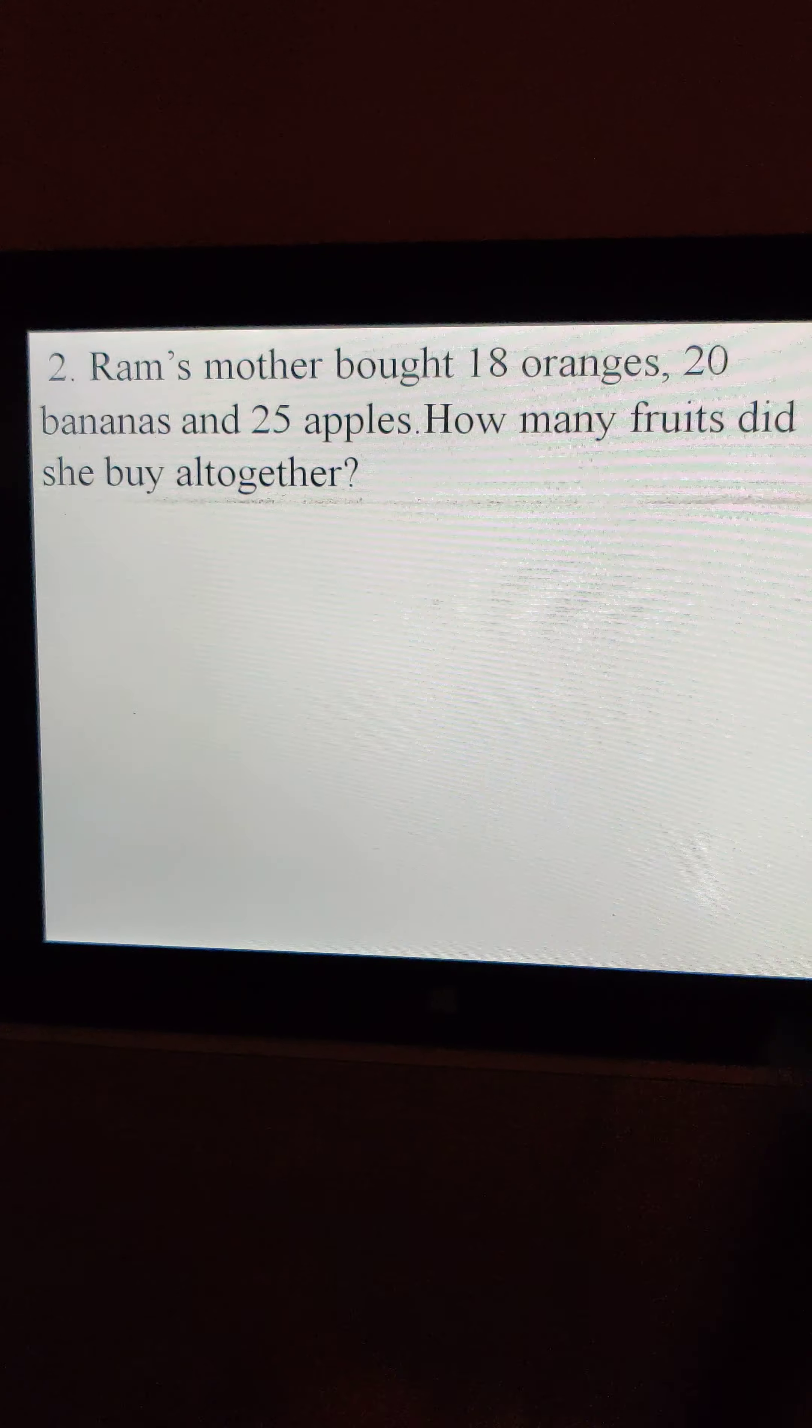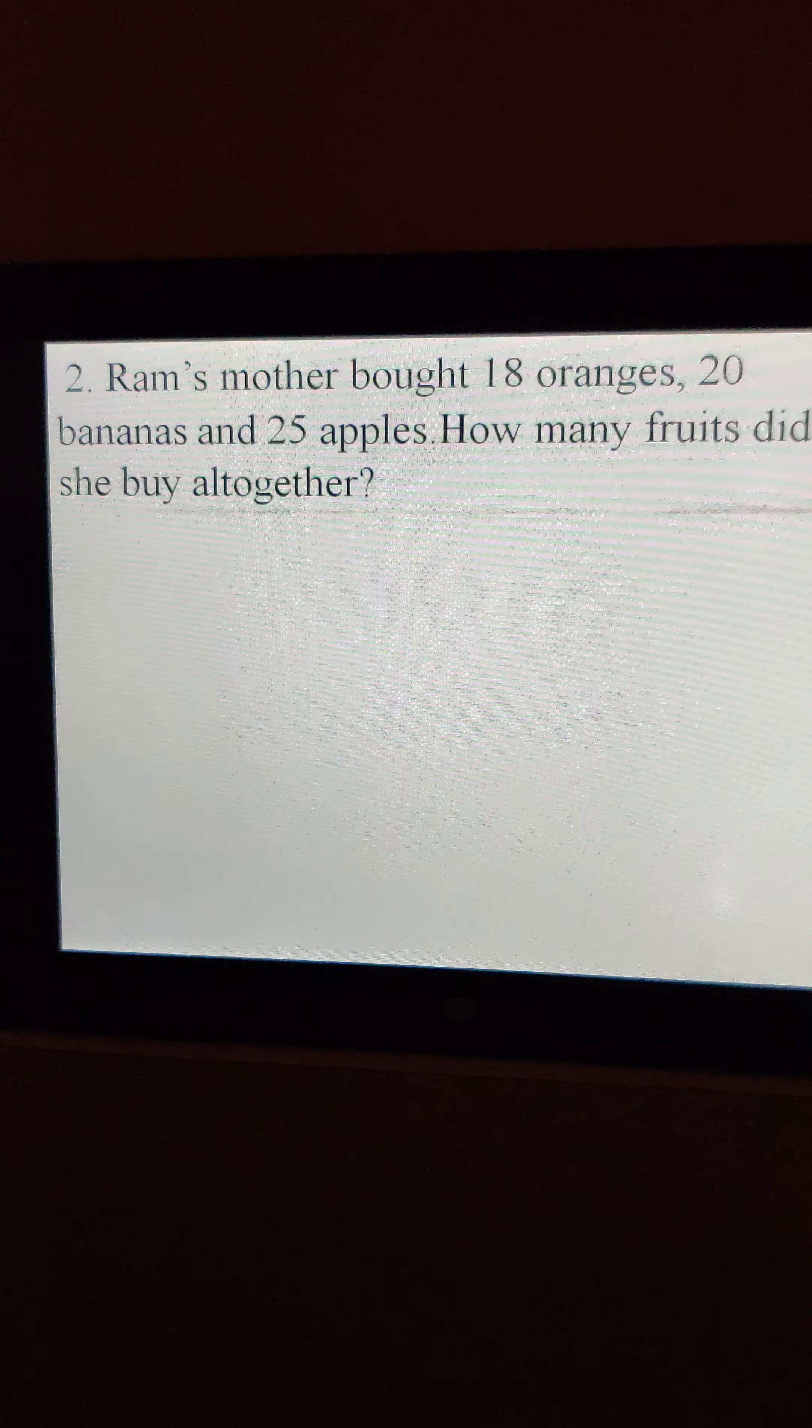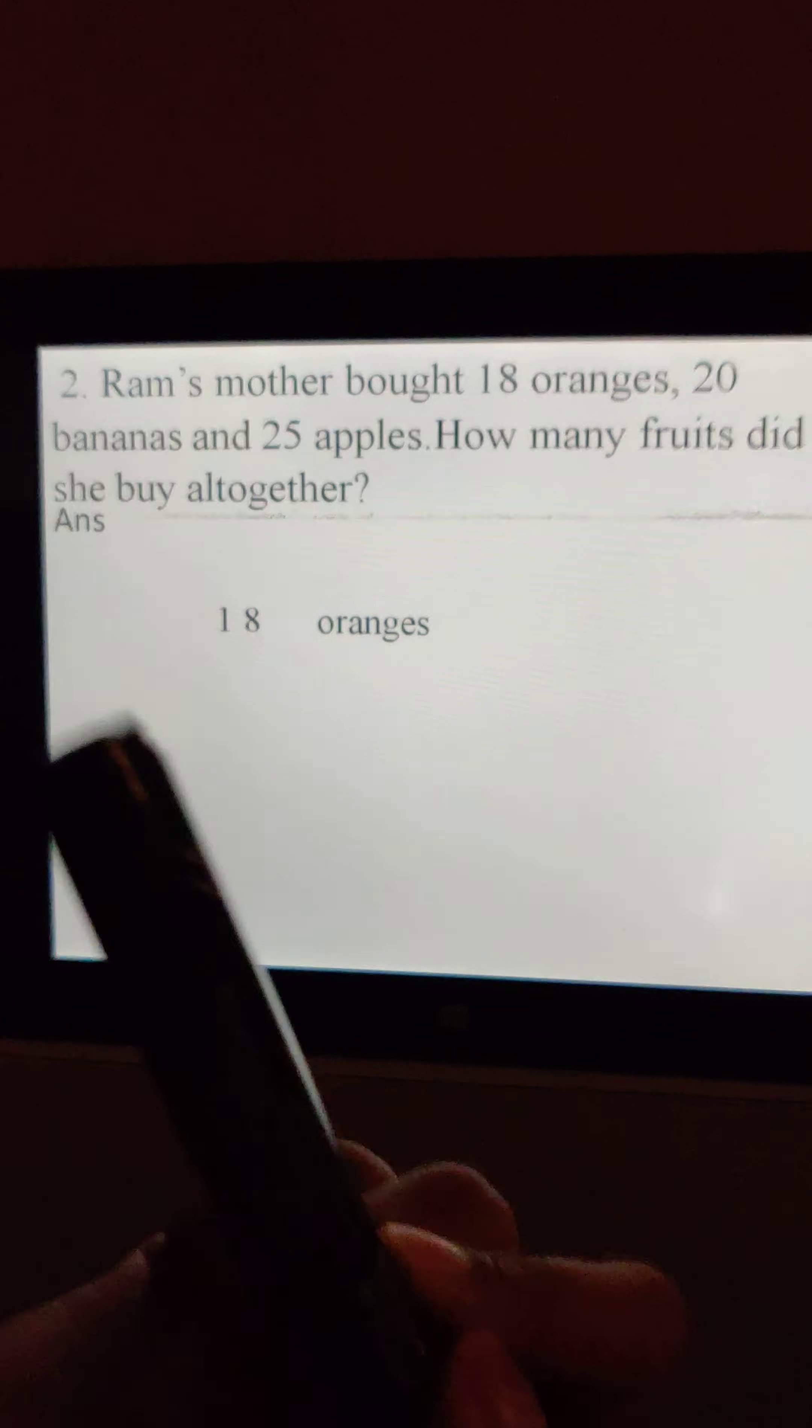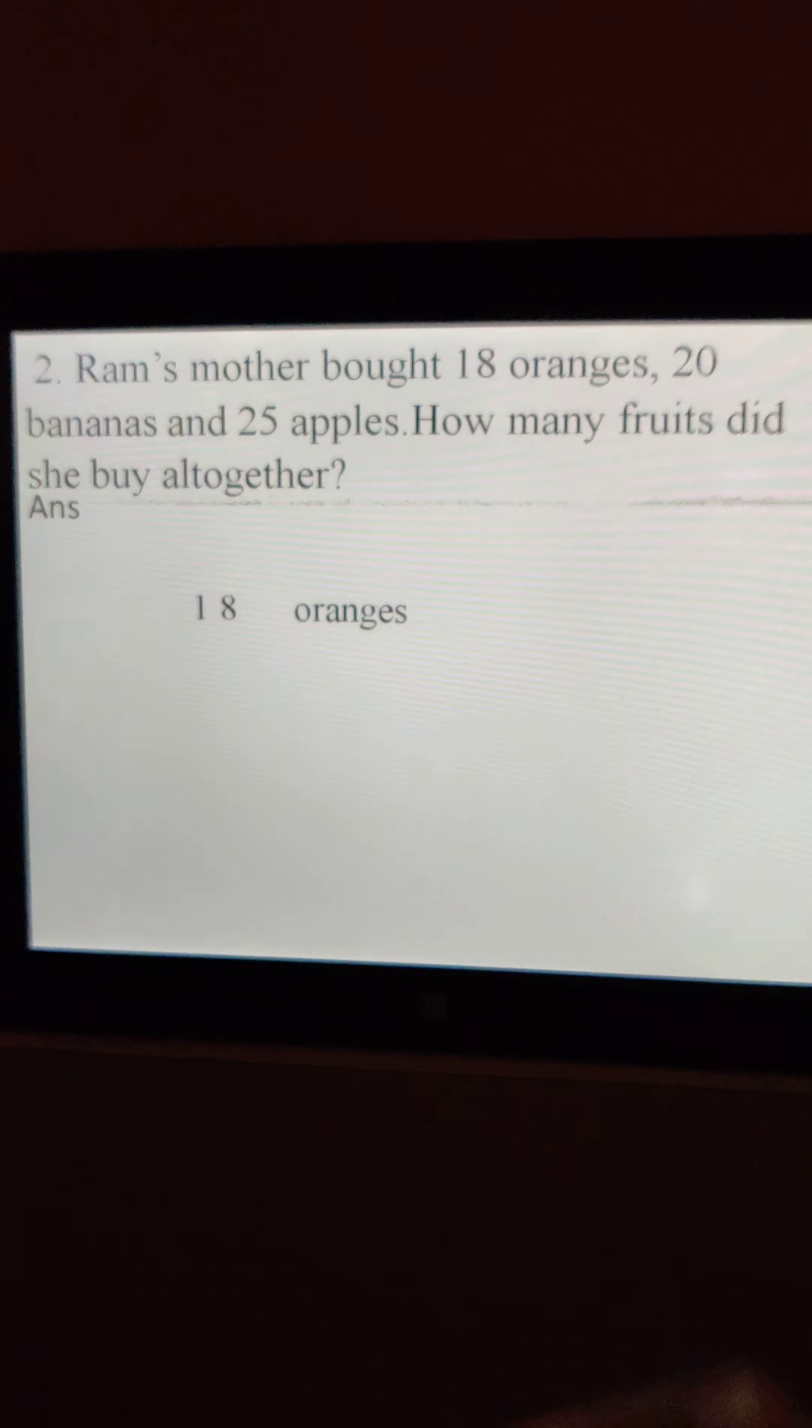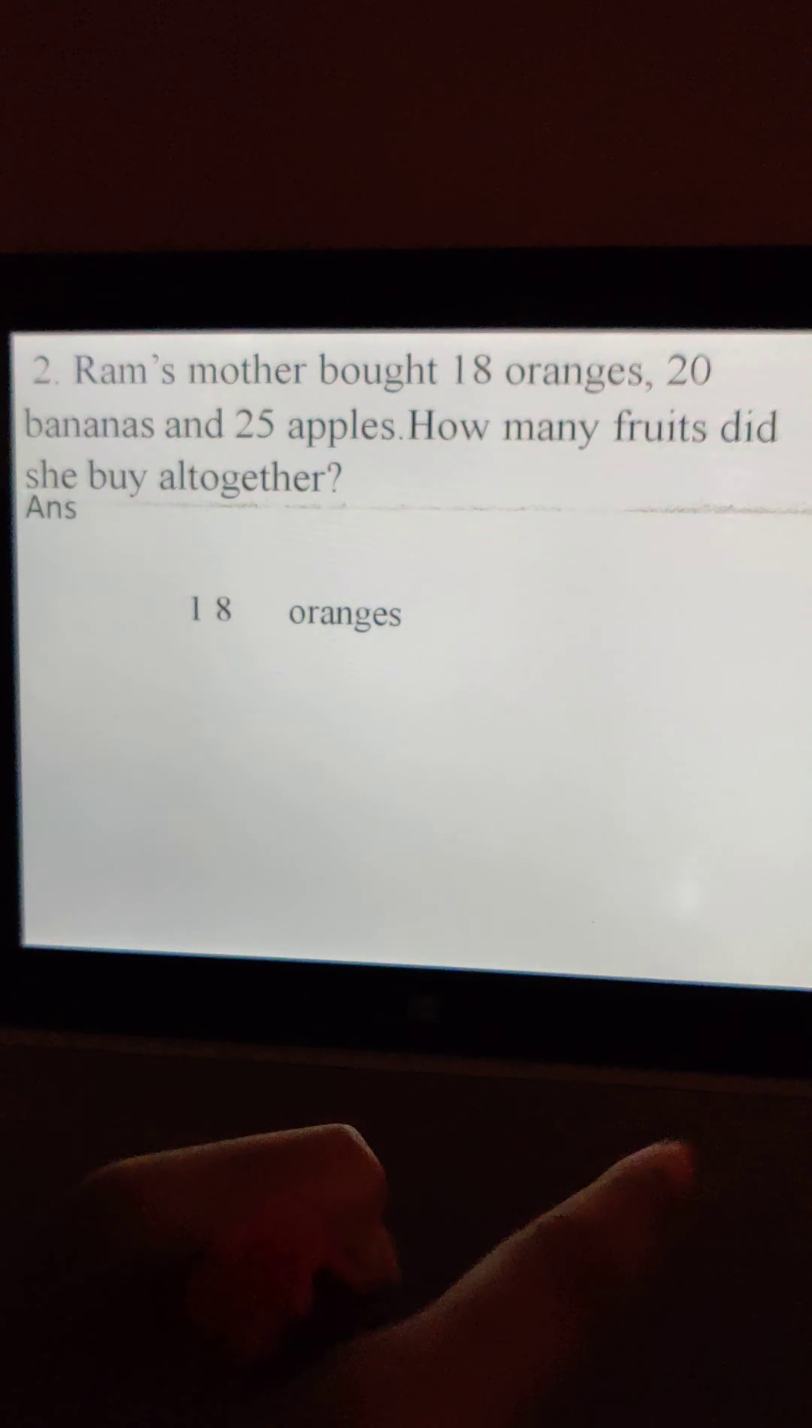So what will we do? Total, we have to find out altogether is there, see? This word indicates addition. So we will do answer: 18 oranges. See, one more thing keep in your mind. Never write long, long sentences. Make it simple and understandable, so it's easy for you to understand.